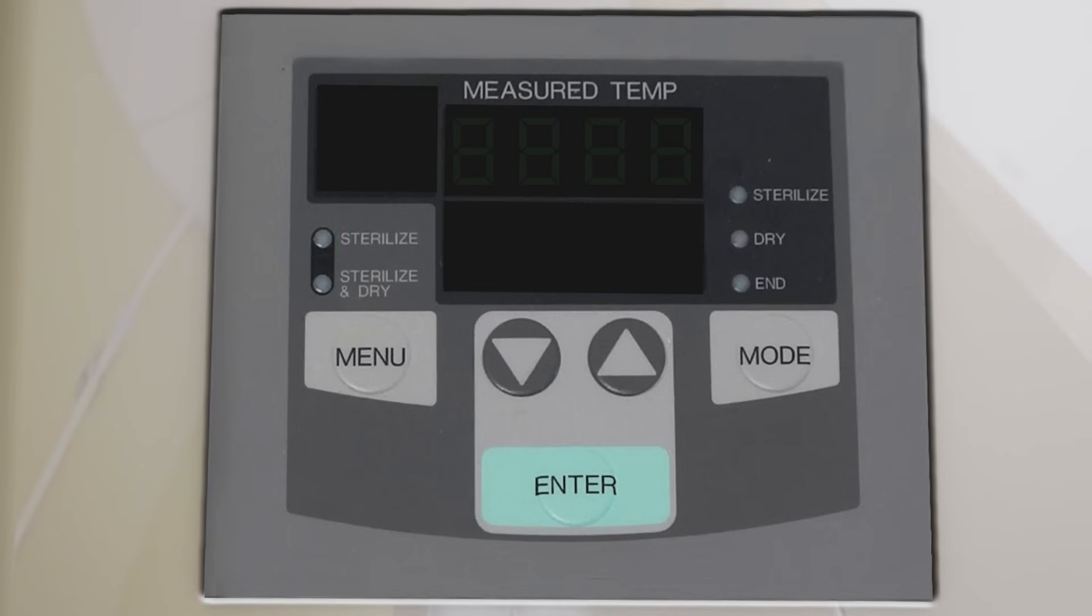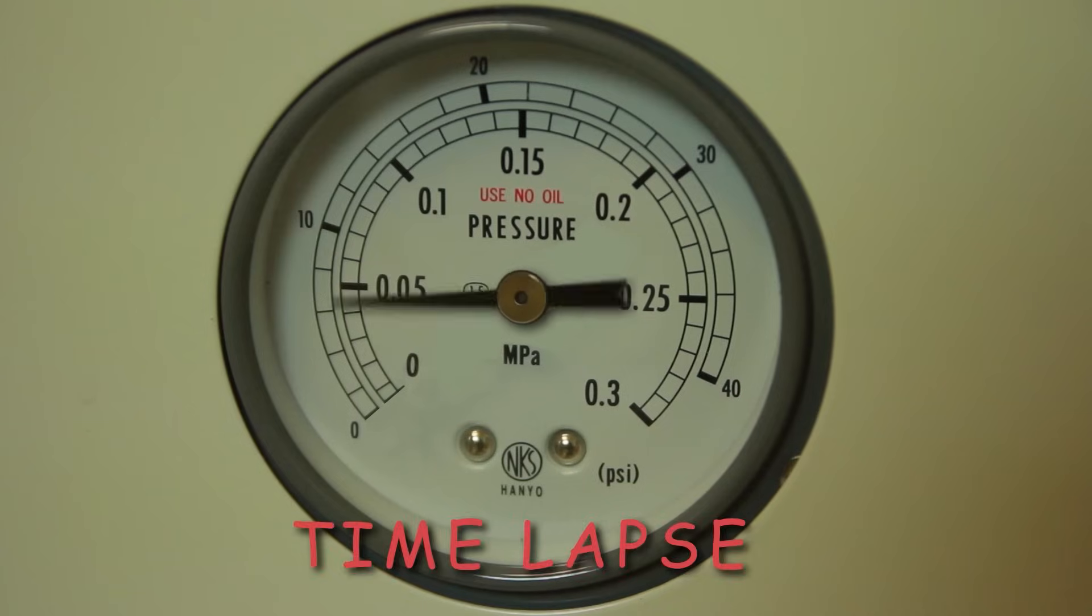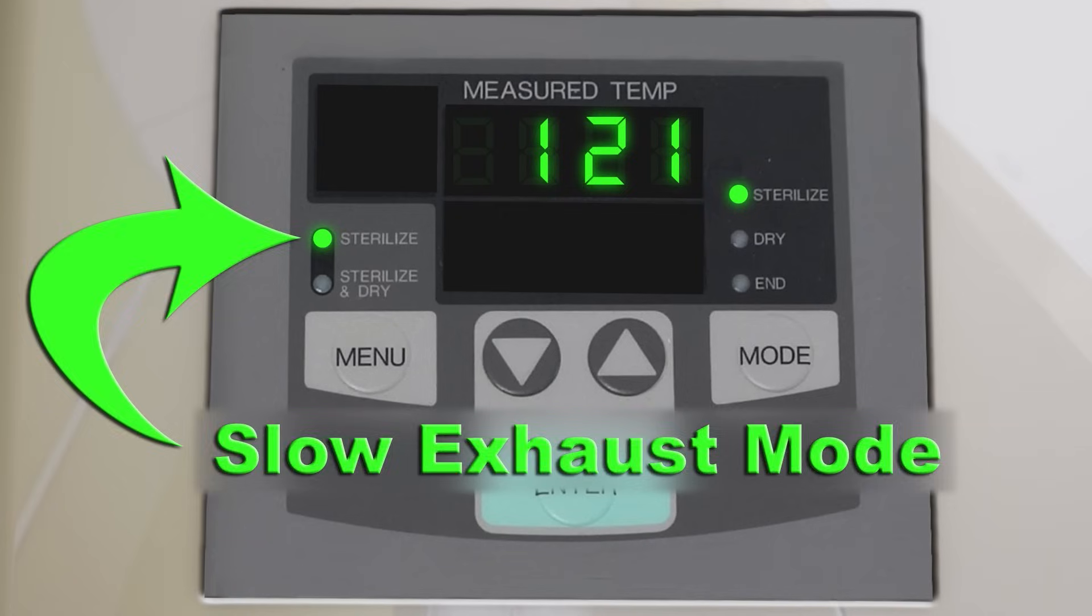Use the control panel to set the mode to sterilize, the temperature to 121 degrees Celsius, and the pressure to 15 psi. The slow exhaust mode prevents the liquid from boiling over and out of the flask. Run the autoclave for at least 15 minutes.